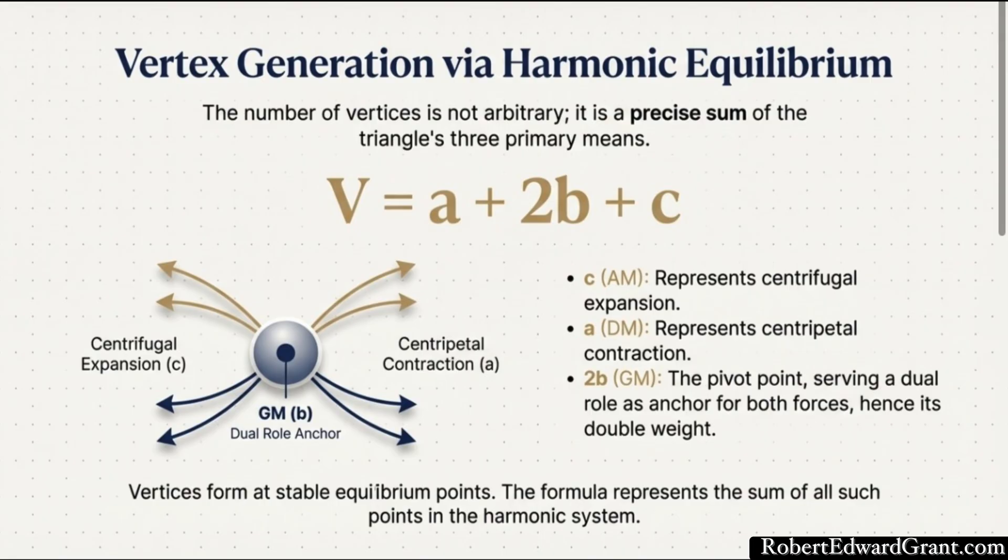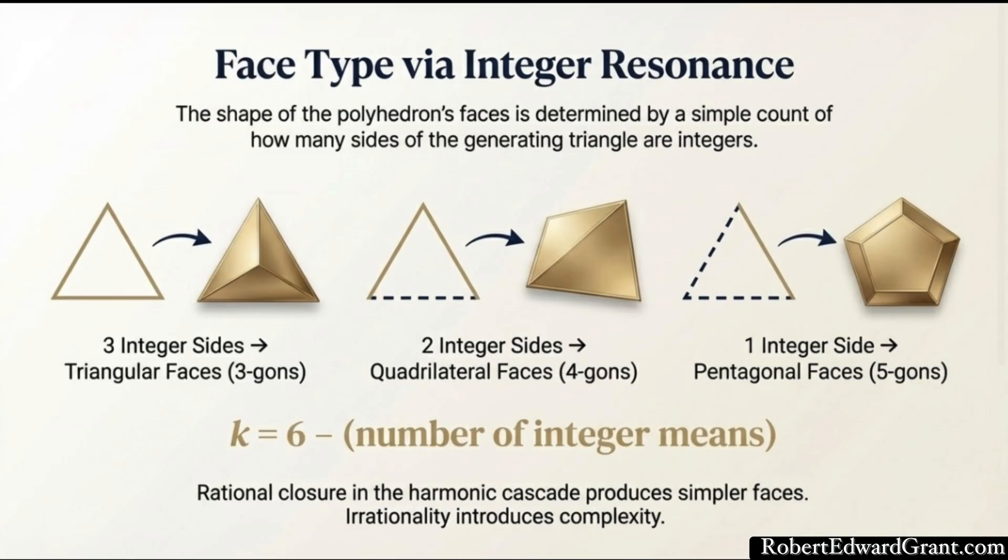Once we have V, the number of vertices, Stage 2 is figuring out the face type. What are the walls of this solid made of? Are they squares, triangles, pentagons? The answer is encoded directly in the numerical structure of the triangle itself, just whether the sides are integers or not. This is the face type theorem. The rule is simple. The face type, a K-gon, is determined by K equals 6 minus the number of sides among A, B, and C that are whole numbers, integers.